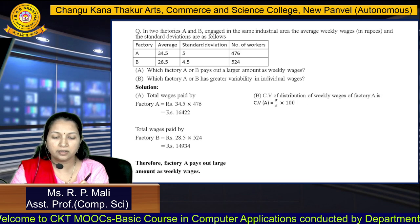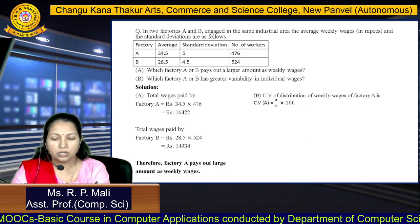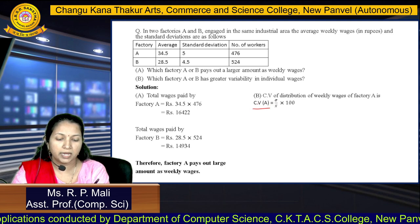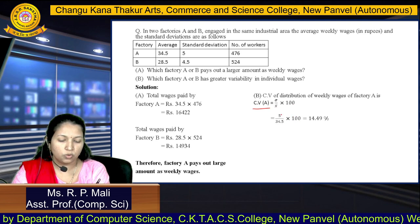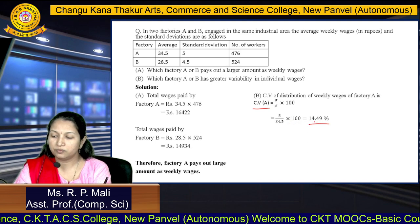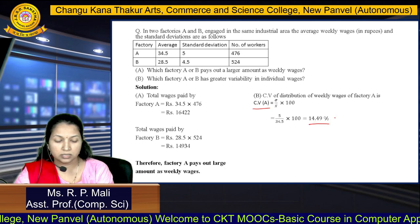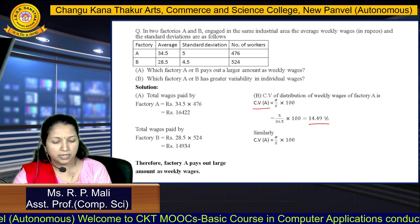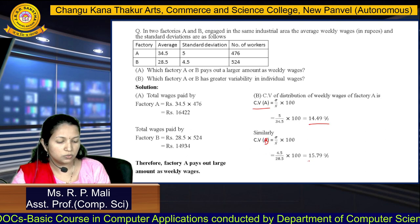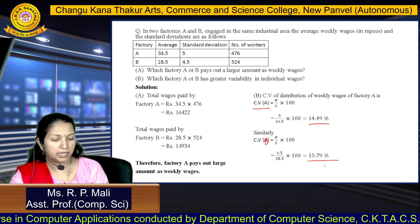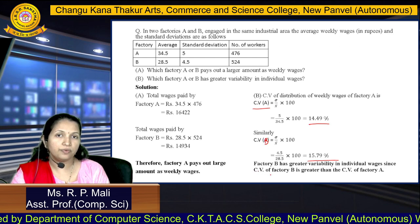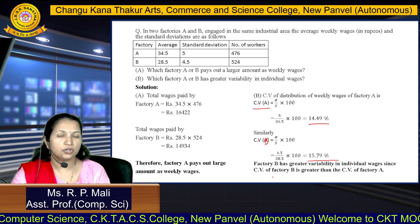To find which factory has greater variability in individual wages, we calculate the coefficient of variation. CV for factory A = (σ/X̄) × 100 = (5/34.5) × 100 = 14.49%. CV for factory B = 15.79%. Since the CV of factory B is greater than the CV of factory A, factory B has greater variability in individual wages.